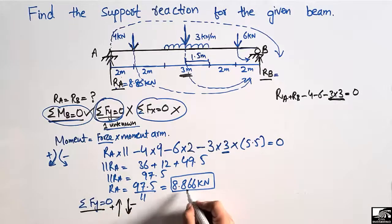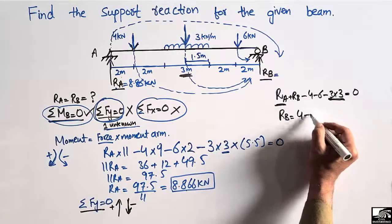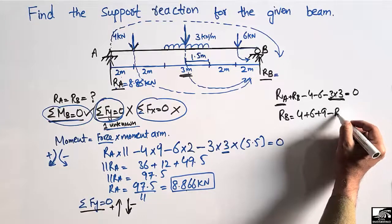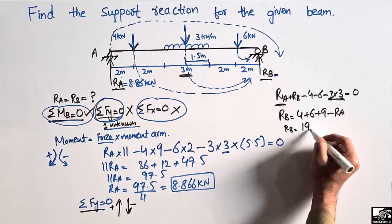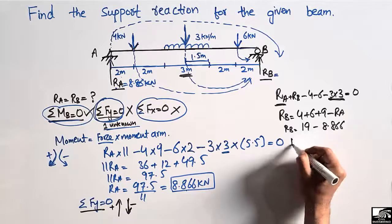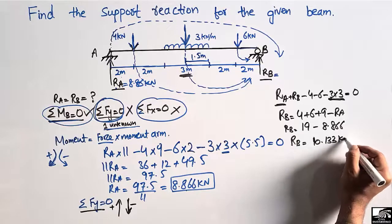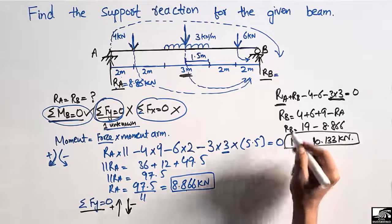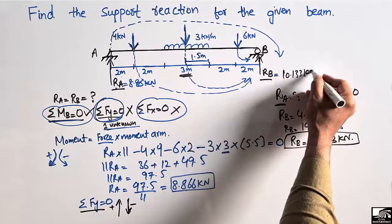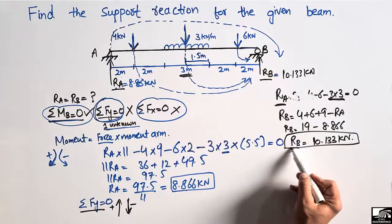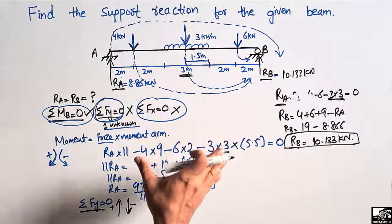Substituting RA = 8.866 kN and shifting all known values to the right side: RB = 4 + 6 + 9 − 8.866 = 19 − 8.866 = 10.133 kN. So the support reaction at B is 10.133 kN. This is how we find the support reactions using the two equilibrium equations.